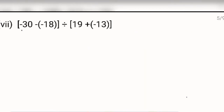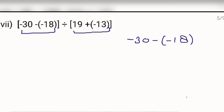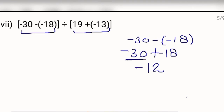Next, firstly you will solve the first bracket, then the second bracket, then divide them. As you have studied, solve the brackets first. This is minus 30 minus minus 18. Open the bracket: minus 30 minus minus plus 80. The signs of both numbers are different, so the values will be subtracted. You get 12, and the sign will be of the greater number, which is minus. So this value is minus 12.